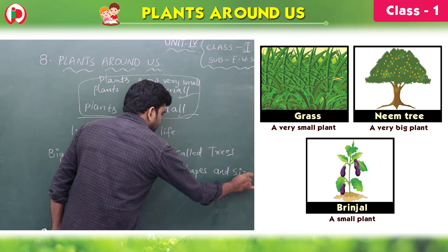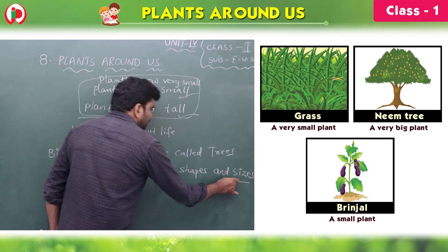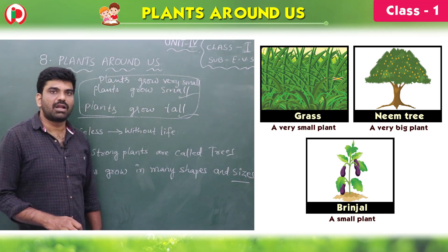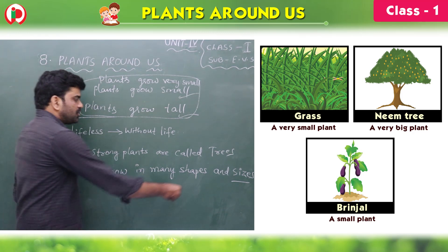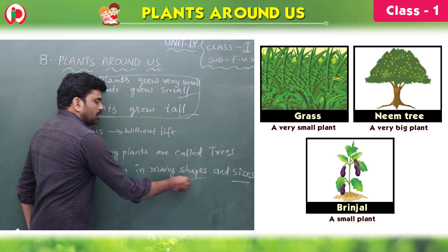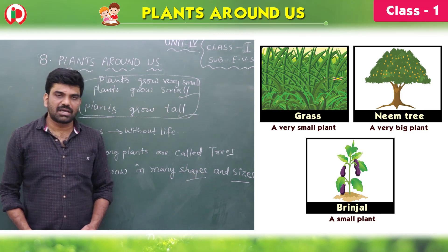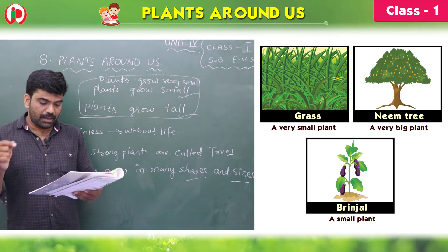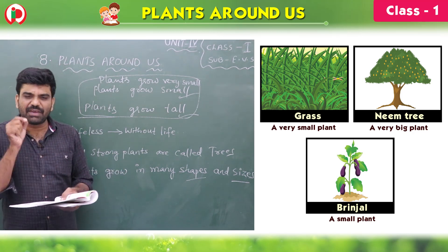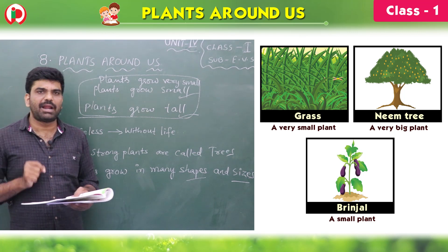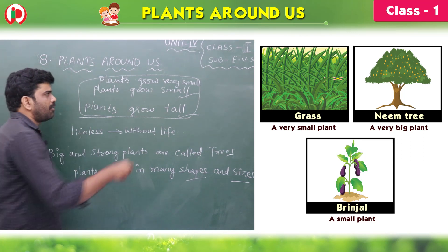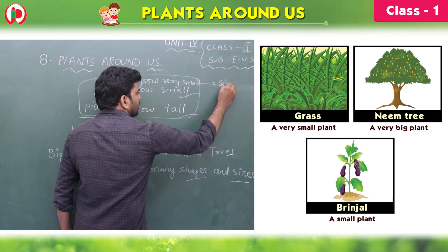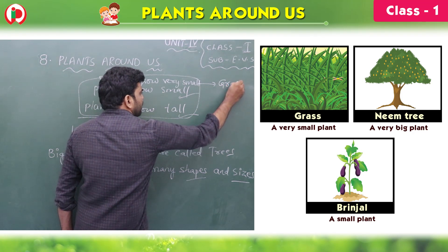You have seen the sizes — some are big, some are very big, some are small, some are very small. Shapes also — all plants are not the same shape. Grass is there; it is a very small plant. Grass is an example for a very small plant.